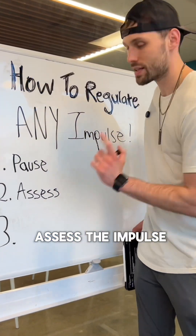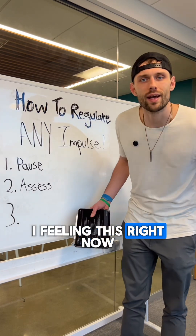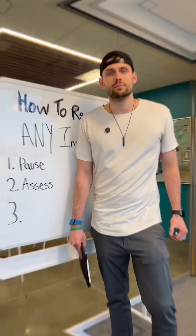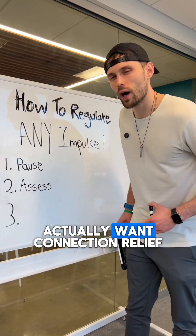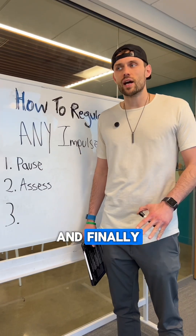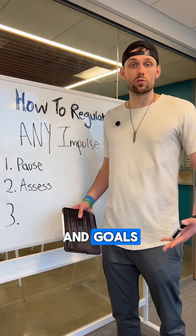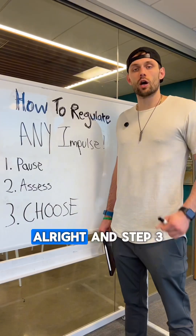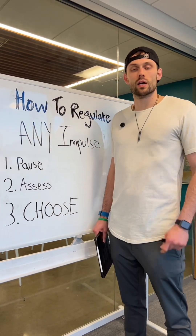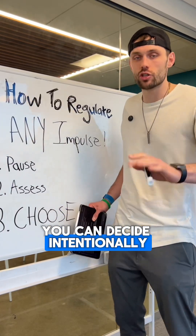Step two is to assess the impulse. Ask yourself: Why am I feeling this right now? Is it boredom, stress, or genuine desire? What is it I actually want — connection, relief, stimulation? And finally, does acting on this align with my values and goals?